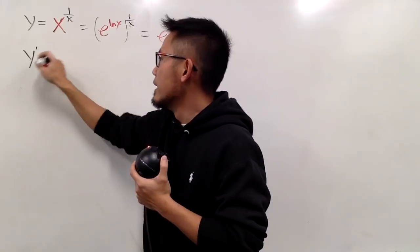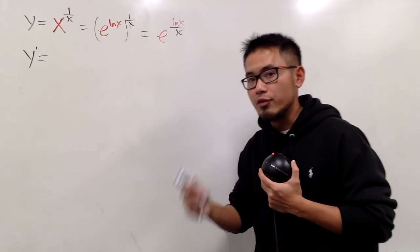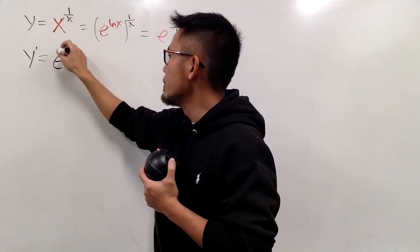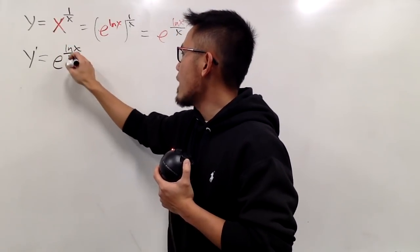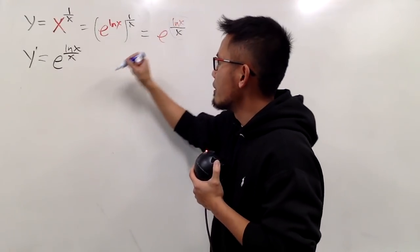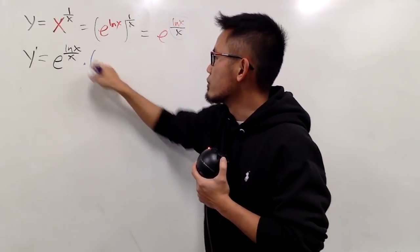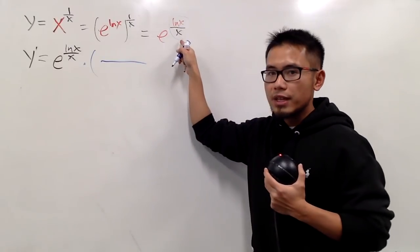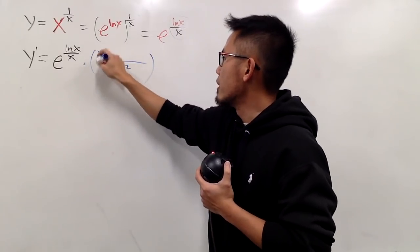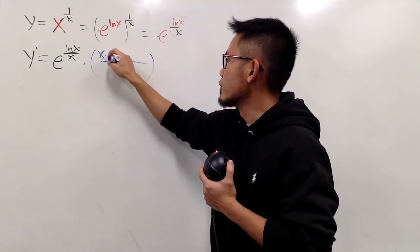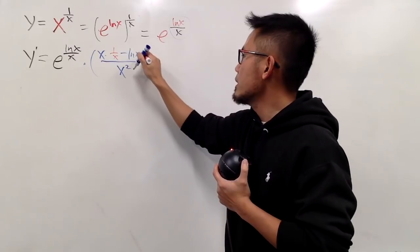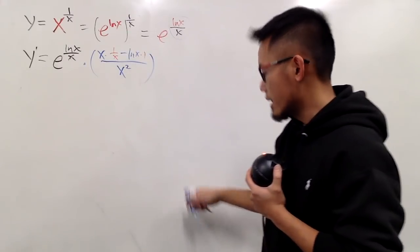So let's go ahead and put down y prime. Whenever we differentiate e to the something, the function part stays first. So we'll write down e to the ln x over x, and now we have to use the chain rule. So we are going to multiply by the derivative of this exponent. That's a quotient, so we have to use the quotient rule. Let's square the denominator — that's x squared — then put down the denominator times the derivative of the top, which is 1 over x, and then minus the top function ln x, multiplied by the derivative of the bottom, which is just 1.